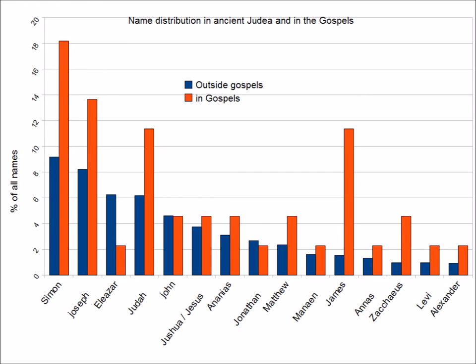The distribution of names in ancient Judea was different from modern times in that common names were more common than they now are. For example, the most popular name given to baby boys in the United Kingdom over the past five years or so has been Oliver — approximately 2% of boys. In ancient Judea the commonest male name was Simon and accounted for 9% of men. The five most common male names accounted for 35% of men. These high name frequencies led to a problem for somebody writing a history, particularly as surnames were rarely used. It meant that you inevitably have a lot of people called Simon in any history, so you therefore had to include qualifiers to allow the reader to distinguish between them.